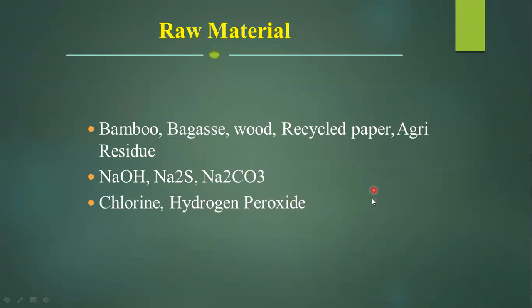The raw materials required for this process are bamboo, bagasse, wood, recycled paper, and agricultural residue — it depends upon what type of pulp and paper you want to form. We also add alkali for this process, that is sodium hydroxide, sodium sulphide, and sodium carbonate. We also add chlorine and hydrogen peroxide for the bleaching of the pulp.